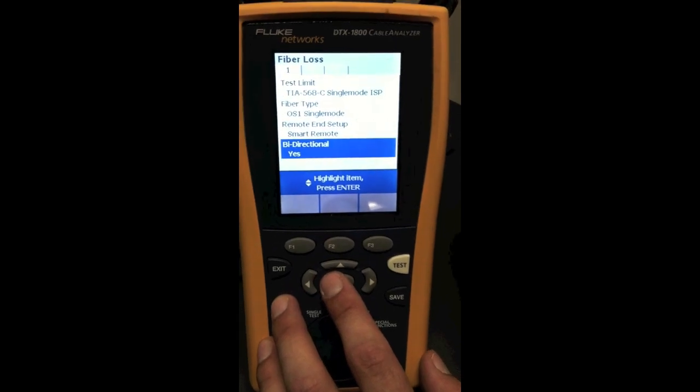If we had our multi-mode adapter and of course right now we want to leave it for OS1. Our remote end setup is always going to be set to a smart remote which is the other end of our testing unit. And our bi-directional test is to test from both ends of the cable so it's running two tests at the same time simultaneously.